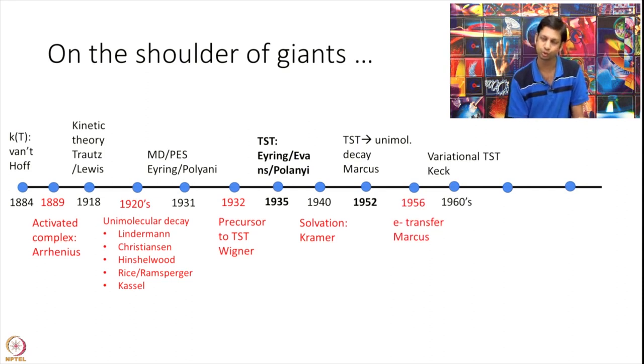After that, Marcus also solved another problem which is that of electron transfer. So a bond is not breaking and forming, only an electron is transferring from one side to another. So Marcus got a Nobel Prize for that.